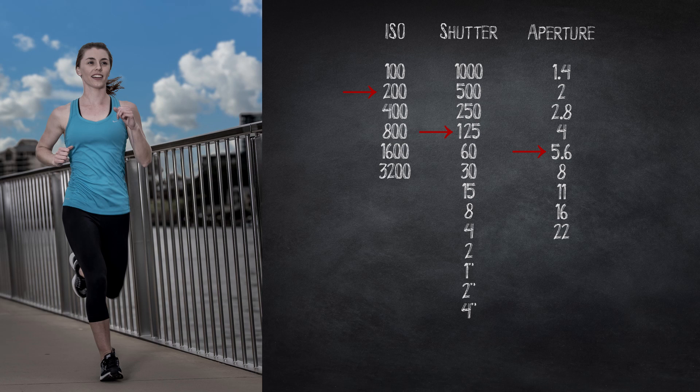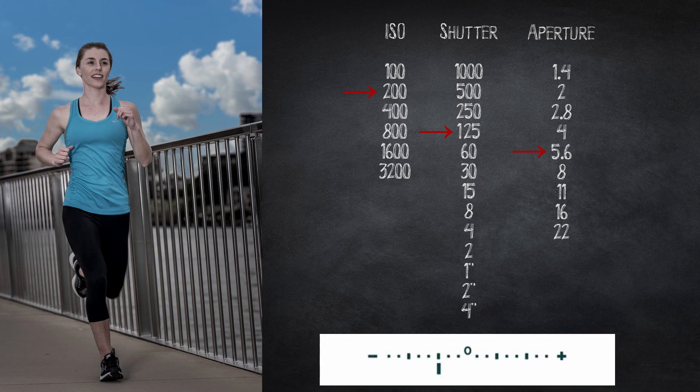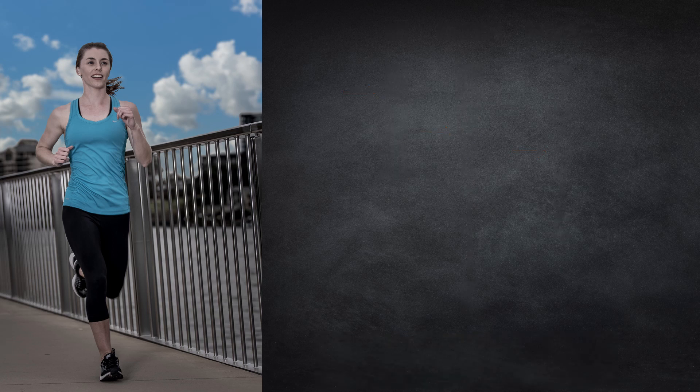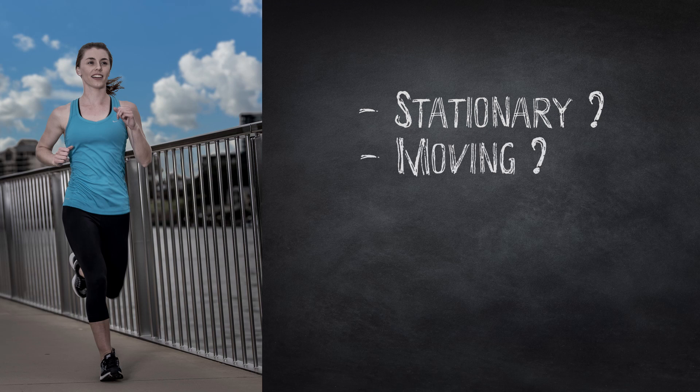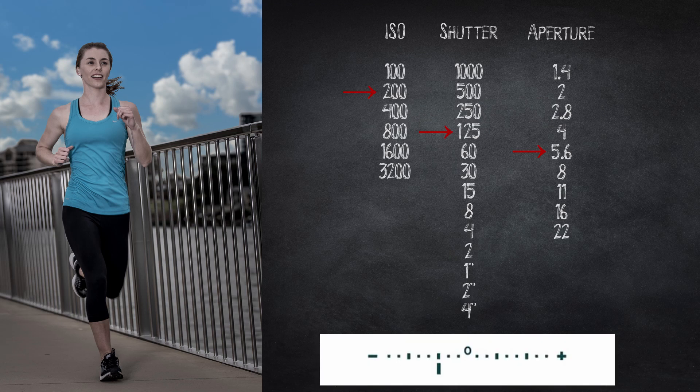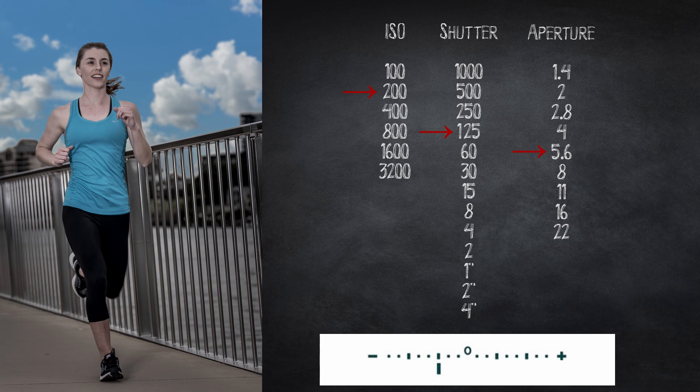In this example we have a jogger running towards the camera. Just like before you turn your camera on, what just happens to have these settings and the light meter shows you one stop underexposed. So what is stationary, what is moving, what do you want sharp, what do you want blurred. The jogger is obviously going to be moving.